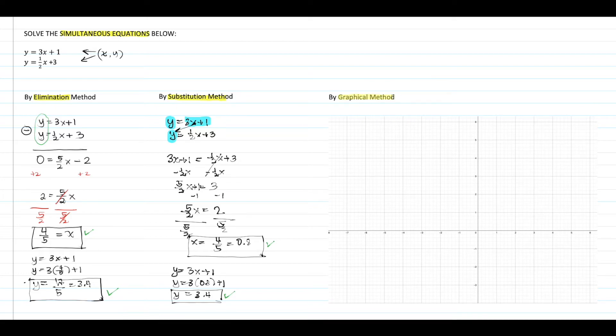The third method is graphical method and requires skills in graphing straight lines. To graph the first equation y equals 3x plus 1, the y-intercept is 1 and the gradient is 3/1. We will use these two information to find the other points and connect them to create the line for the first equation.